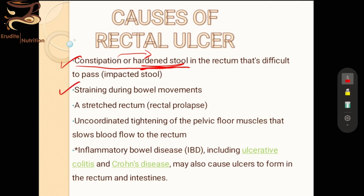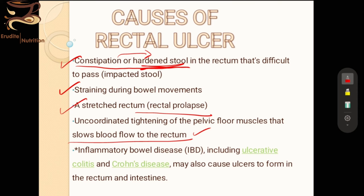The second cause is straining during bowel movements, again connected with constipation. Third is rectal prolapse — a dangerous condition where the muscles of the rectum lose strength and the rectum can even protrude outside the body cavity. Uncoordinated tightening of pelvic floor muscles can also slow blood flow to the rectum. People on bed rest or with sedentary lifestyles who do no physical activity are particularly at risk. The last cause is inflammatory bowel disease or ulcerative colitis, which will be discussed in the later part of this presentation.